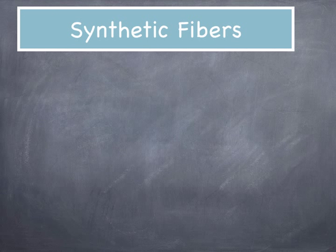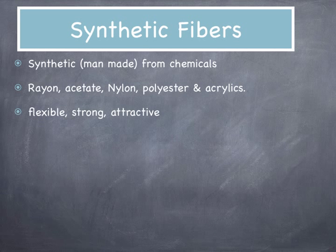The last main category of fibers are synthetic fibers, which are man-made. They come from chemicals, either in some combination or some degree. They include materials like rayon, acetate, nylon, polyester, and different acrylics. When we do our fiber lab, you can look at labels to see what fibers make up different materials. The benefit of synthetic fibers is that they are more flexible, definitely stronger, used to make very attractive clothing, and have many other beneficial properties.